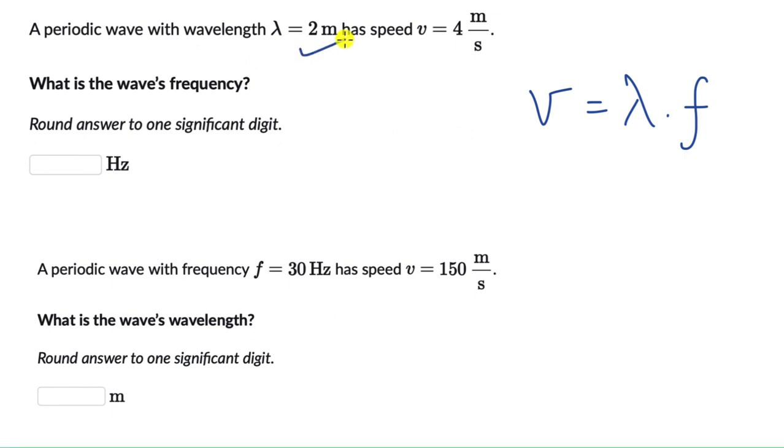In the first question, we are given the wavelength which is 2 meters and the wave speed 4. So this is 4 equals to 2 into F. F comes out to be equal to 2 hertz.